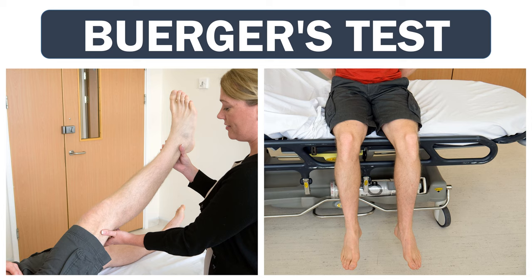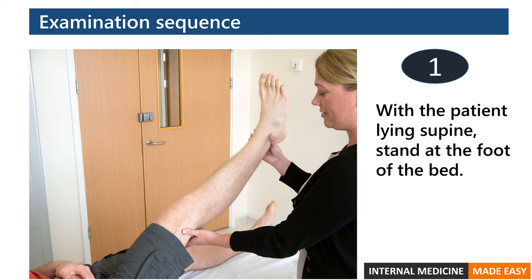Berger's test is used to assess the adequacy of the arterial supply to the leg. To perform Berger's test, follow these steps. At first, with the patient lying supine, stand at the foot of the bed.